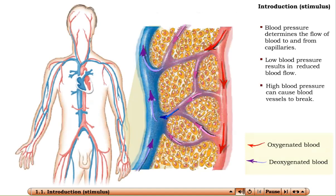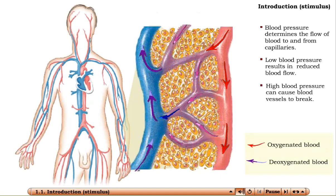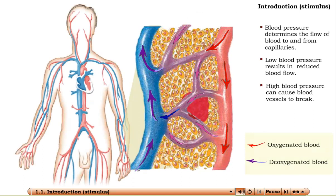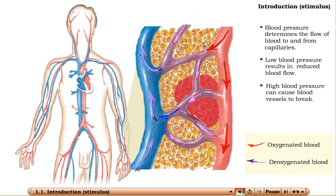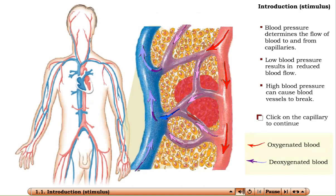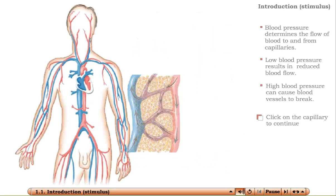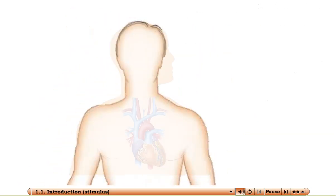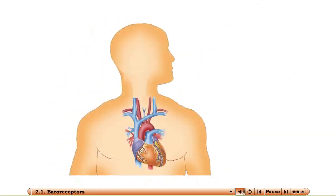If the pressure is too high, blood vessels can break, causing internal bleeding and possibly strokes. The aortic arch and common carotids are arteries that supply blood to critical areas of the body.